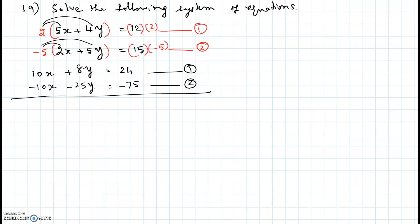Now we will add equation 1 and 2. 10x negative 10x, they get cancelled out. 8y minus 25y, that will be negative 17y equal to 24 minus 75, if you add that will be negative 51.